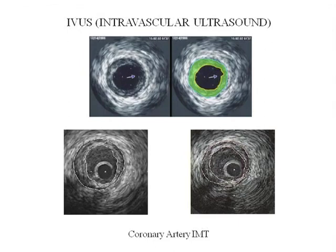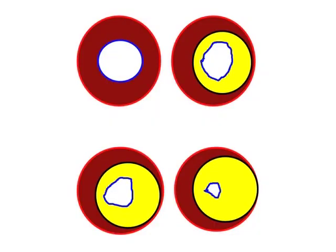Carotid artery intermediate thickness relates more tightly to coronary artery intermediate thickness, as assessed by the intravascular ultrasound. The coronary angiogram may overestimate or underestimate the severity of a narrowing. Intravascular ultrasound studies that actually measure intermediate thickness of the coronary artery show that many plaques extend eccentrically into the vessel wall.